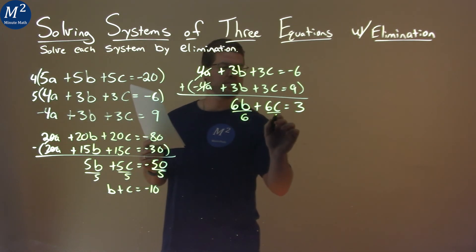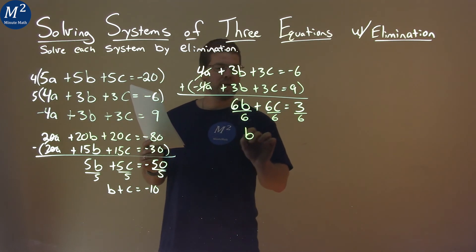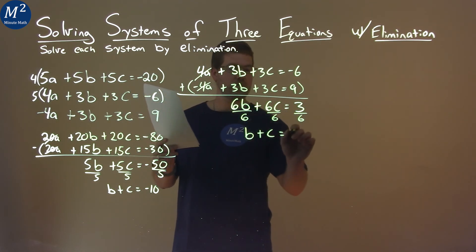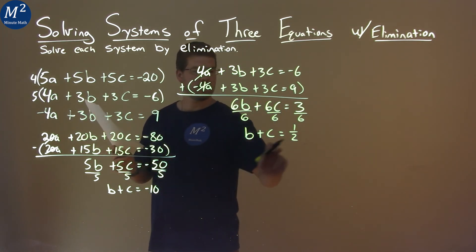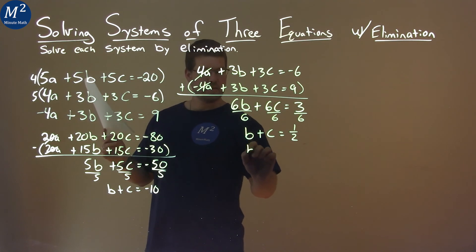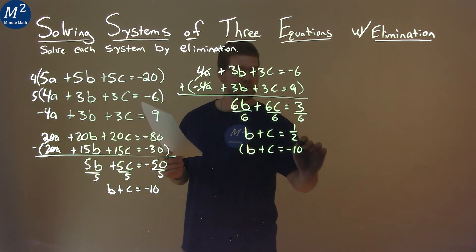Why don't I divide this whole thing by 6? 6 is cancelled. We have b plus c equals 1 half. Great. Let's bring this equation over here. We bring b plus c equals negative 10. And let's subtract these two equations here.